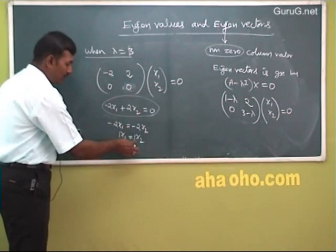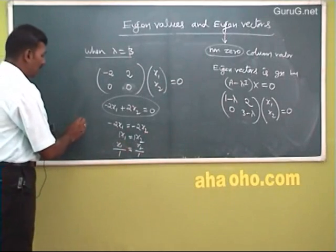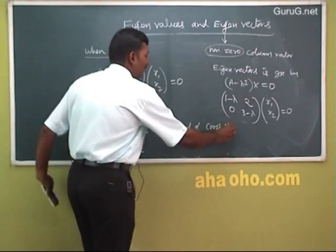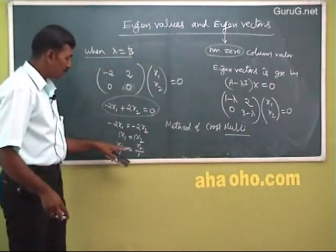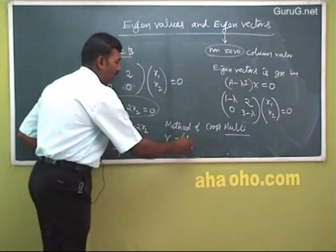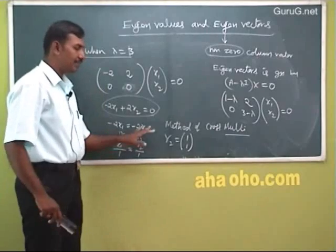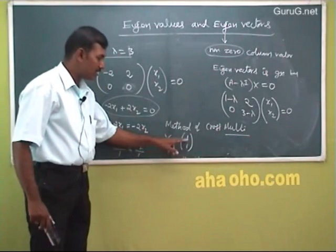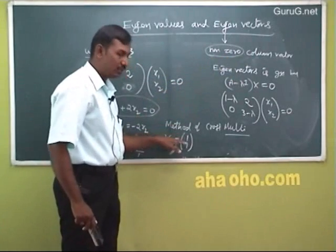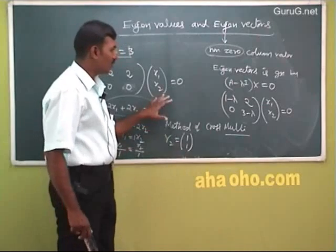Using the cross multiplication method: x₁ by this coefficient equals x₂ by this coefficient. So x₁/1 = x₂/1, giving eigenvector [1; 1]. This is the eigenvector corresponding to eigenvalue λ = 3. If there are two eigenvalues, each has a corresponding eigenvector. The eigenvector must be non-zero — at least one element not equal to zero. This completes the 2×2 example.